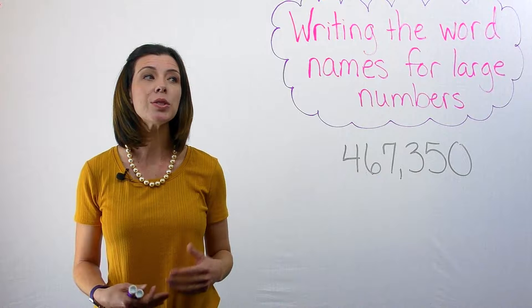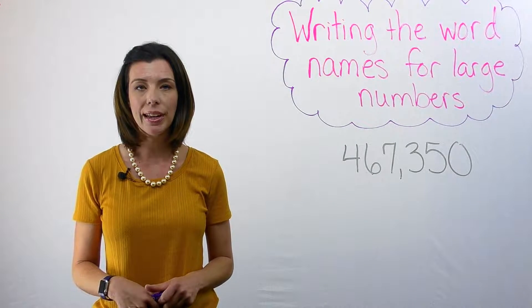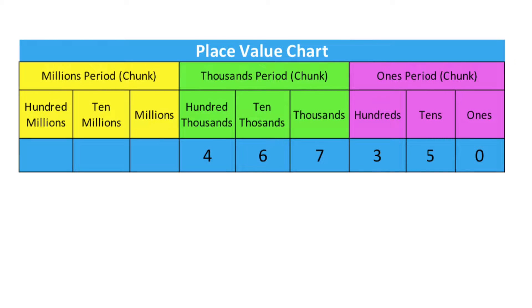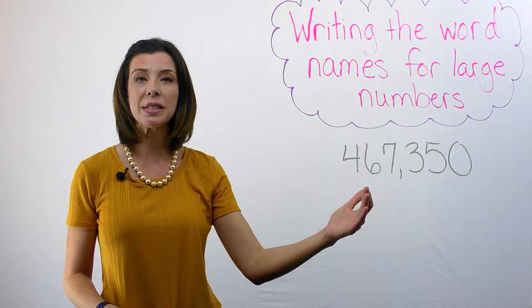The first thing we need to know is what does a place value chart look like. So I went ahead and I'm showing you one here, and you can see that every single digit has a specific name.